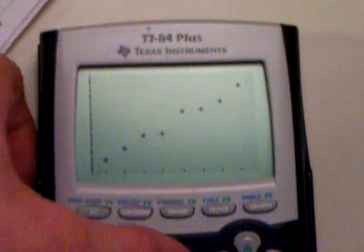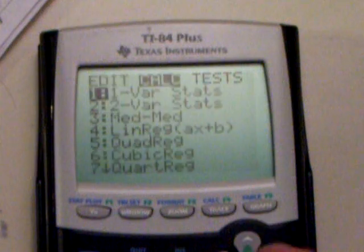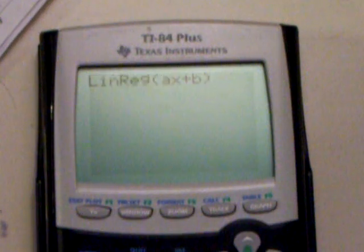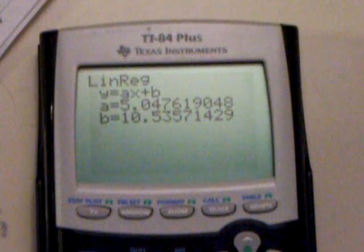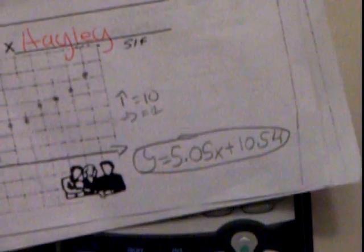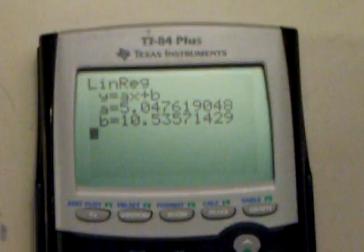Then you're going to go to stat again. Go to calc. Go down to line reg. And there you have your equation. You round up. So this equation happens to be 5.05x plus 10.54. Okay?